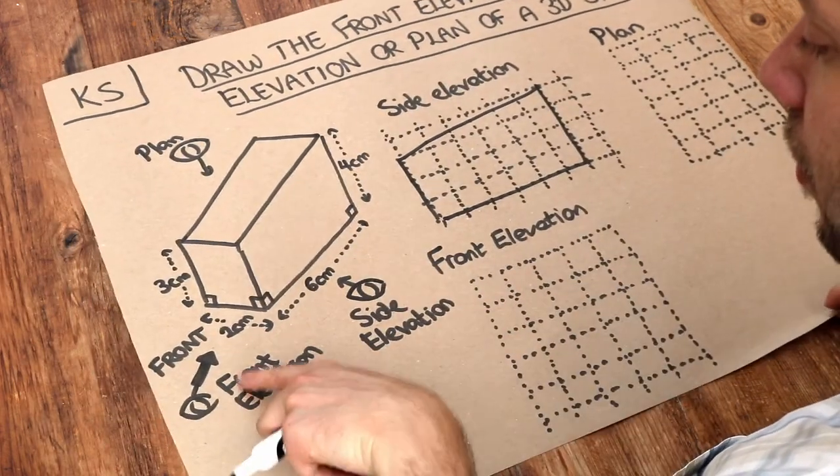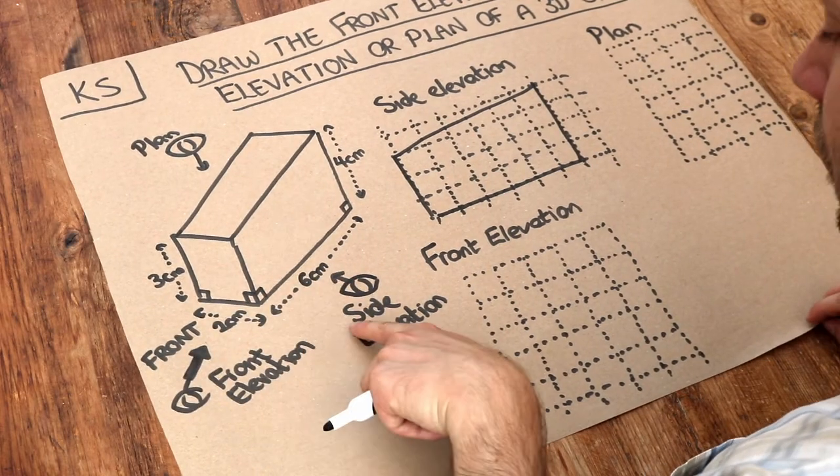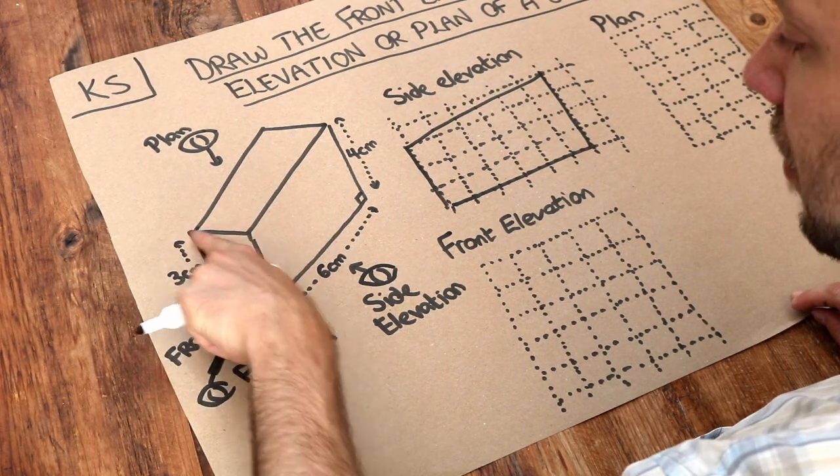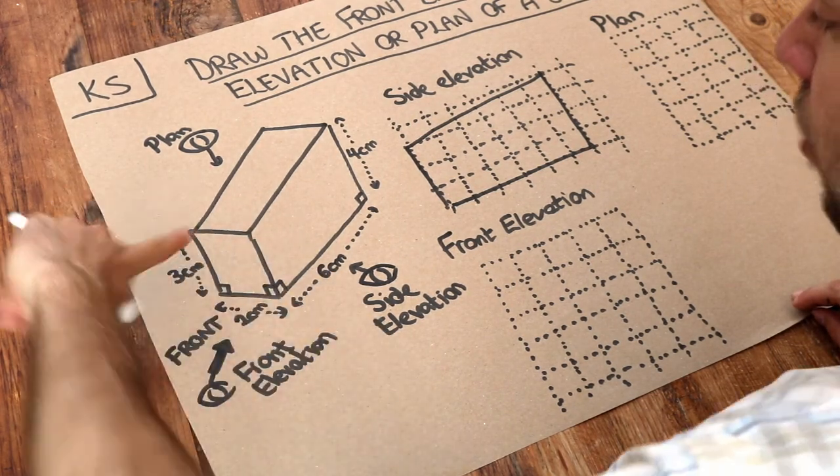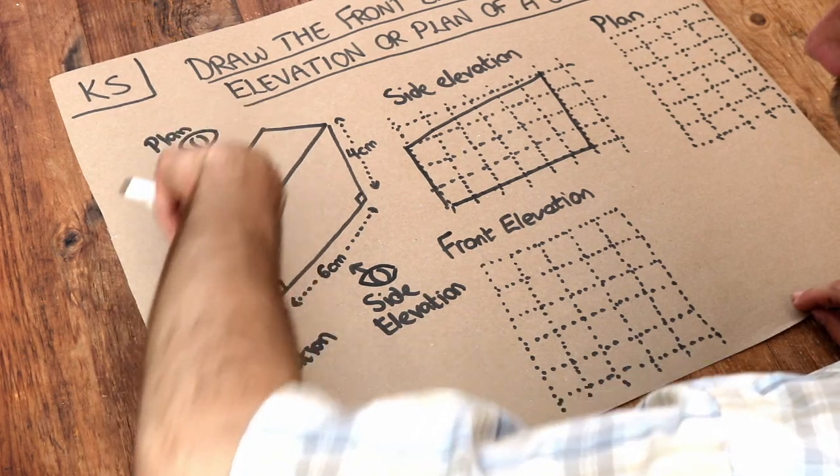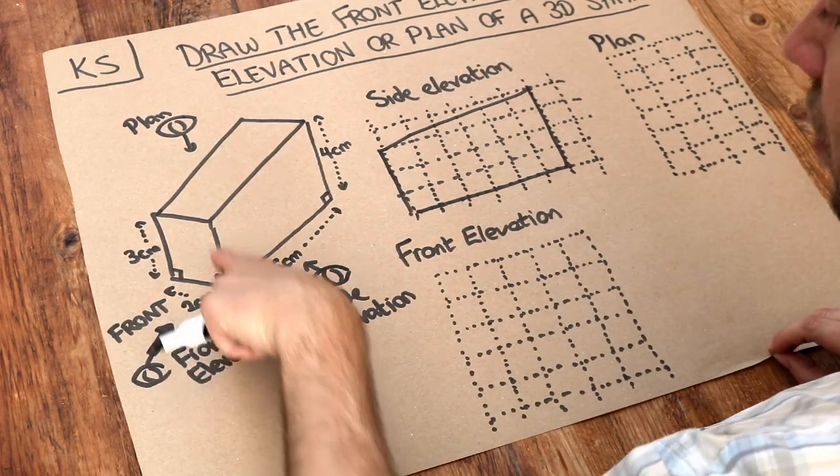What about the view from the front, the front elevation? Well this one's slightly harder but if you're viewing from here you're going to see this rectangle here and you're also going to see another rectangle resulting from this face here. So let's do the rectangle at the bottom first.